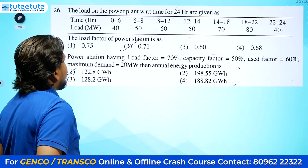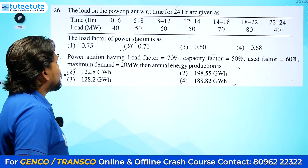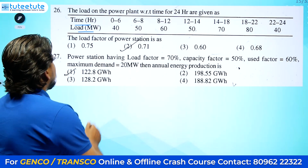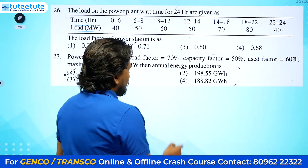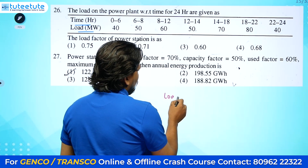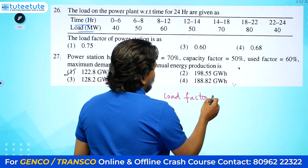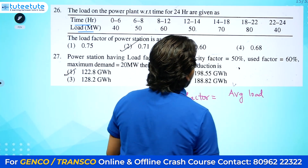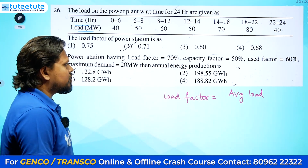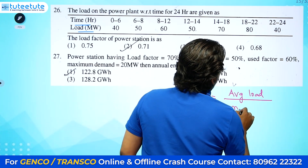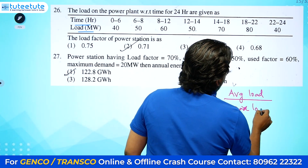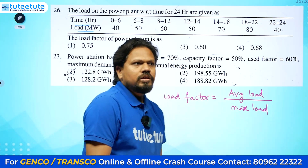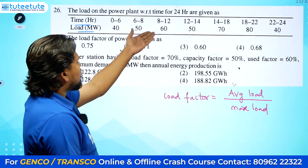The first question: the load on the power plant with respect to time for 24 hours is given. They have given the data for 24 hours — time under load. They are asking about the load factor of the power station. Load factor is nothing but average load divided by maximum load.